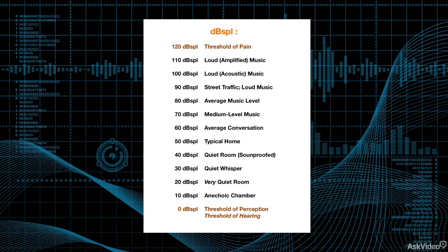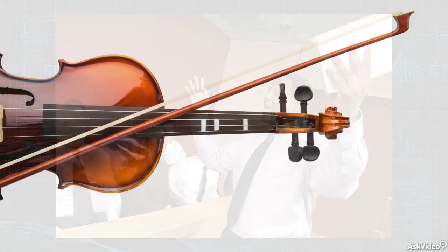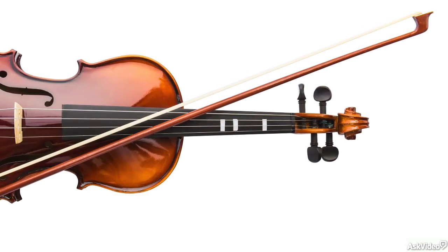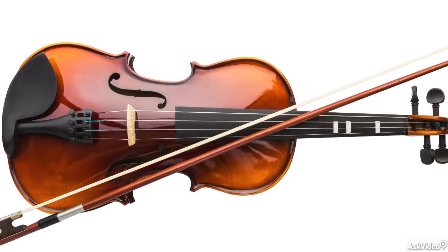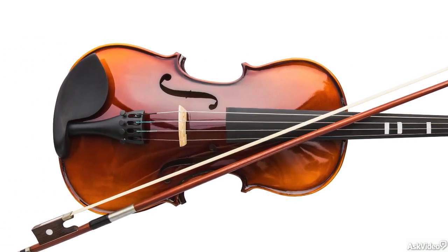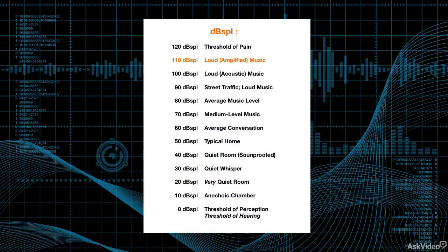To put these levels in some context, two people talking face-to-face probably hear each other at a level of around 50 to 60 dB SPL or so, depending on how quietly or loudly they're speaking and how close together they're standing. Live acoustic music can range from 30 or 40 dB SPL in quiet sections up to about 100 dB SPL or so. Amplified music can be even louder, and levels in the subway can easily hit and exceed the threshold of pain.